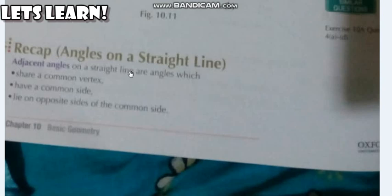Adjacent angles on a straight line are angles which share a common vertex, share a common side, and lie on the opposite sides of the common side.